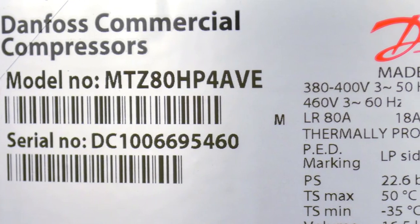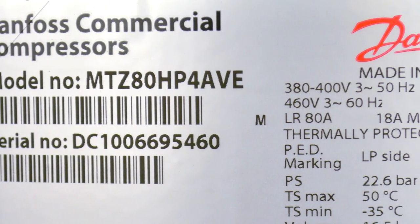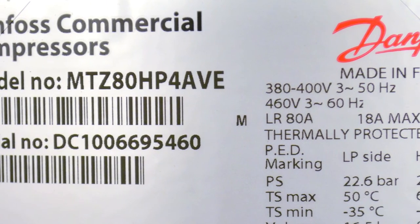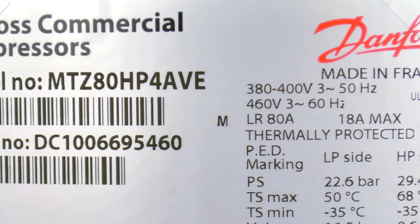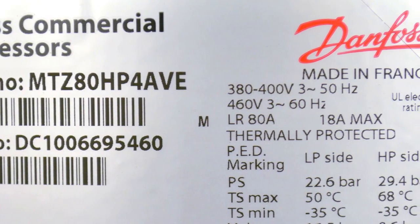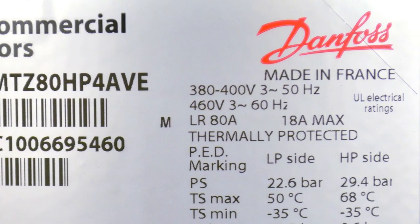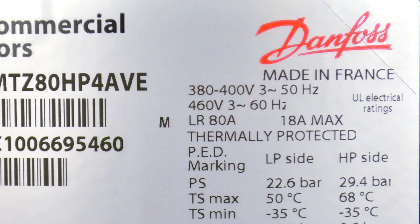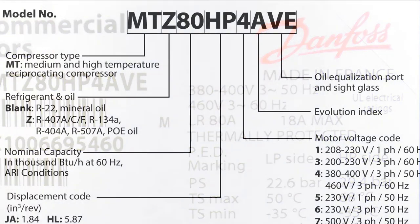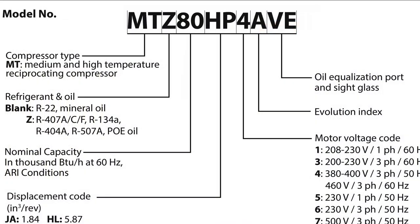Another method used to define a specific compressor is the Danfoss part number. The part number for these compressors is based off the nomenclature and will follow a pattern. To begin, here is an example of the nomenclature used for the MT-MTZ compressors.